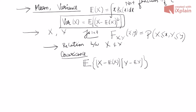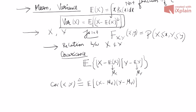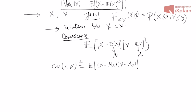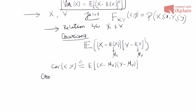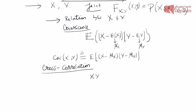To simplify notation, denoting mean of X as μx and mean of Y as μy, covariance is E[(X − μx)(Y − μy)]. There is also the notion of cross-correlation, which is simply E[XY] — the expected value of the product of X and Y. If X and Y are independent, then E[XY] = E[X]·E[Y].